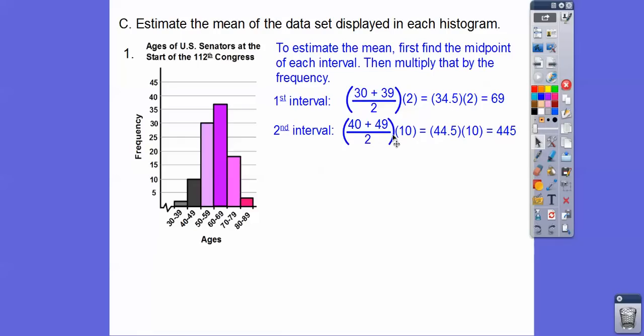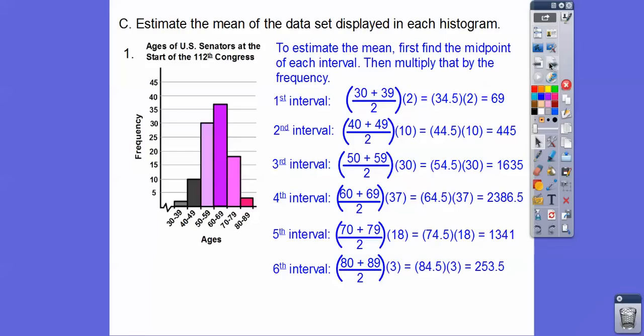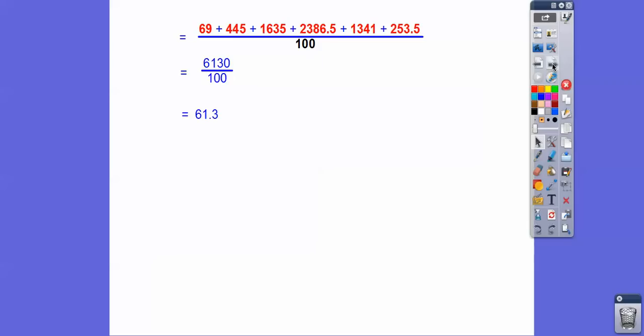So we find the midpoint. So to find the midpoint, we add the two endpoints divided by 2. Times the frequency. So this one went up that 2 right there. That's what that is right there. So we get 69. Then we do the next interval. So the midpoint right here, this is the midpoint, times 10. That 10 is this guy. It's the frequency. So we keep doing that. So there's the third interval, the fourth interval, the fifth interval, and finally the sixth interval right there. And then what we do next is now we add these products. So we're going to add all these numbers right here and then divide it by the sum of these numbers right here.